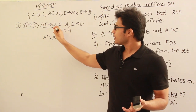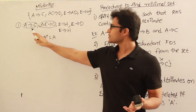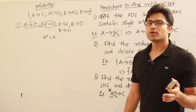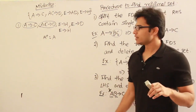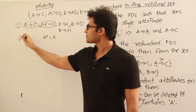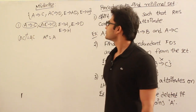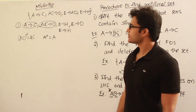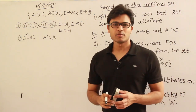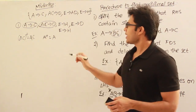Now take AC→D and delete it. From the remaining productions, try to find A+. A+ gives only A — it does not give D. Therefore without this production, A will not be able to determine D. Therefore this production is required.